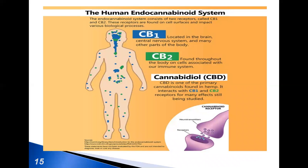Tetrahydrocannabinol exerts its most prominent effects via its actions on two types of cannabinoid receptors. The CB1 receptor is found primarily in the brain and in some peripheral tissues. The CB2 receptor is found primarily in peripheral tissues but is also expressed in neurological cells.